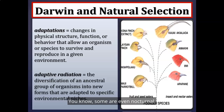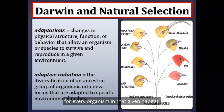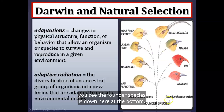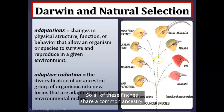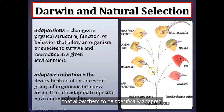This idea of adaptive radiation is actually beneficial for every organism in that habitat. In this diagram, the founder species is at the bottom — envisioning that tree or braided delta image of evolution rather than a linear fashion. Each branch represents a speciation event, and all these finches share a common ancestry.